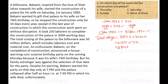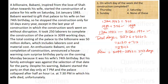The remaining days are 3099 minus 2842, which equals 257. So these 257 days fall in the year 1991.